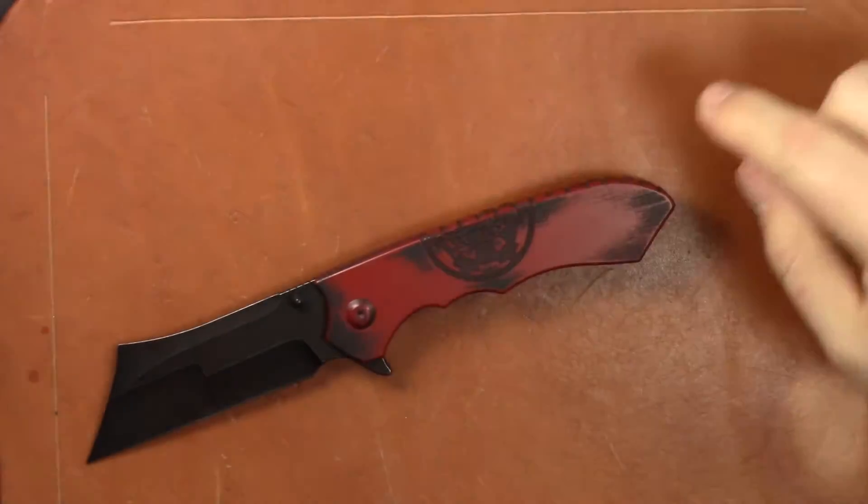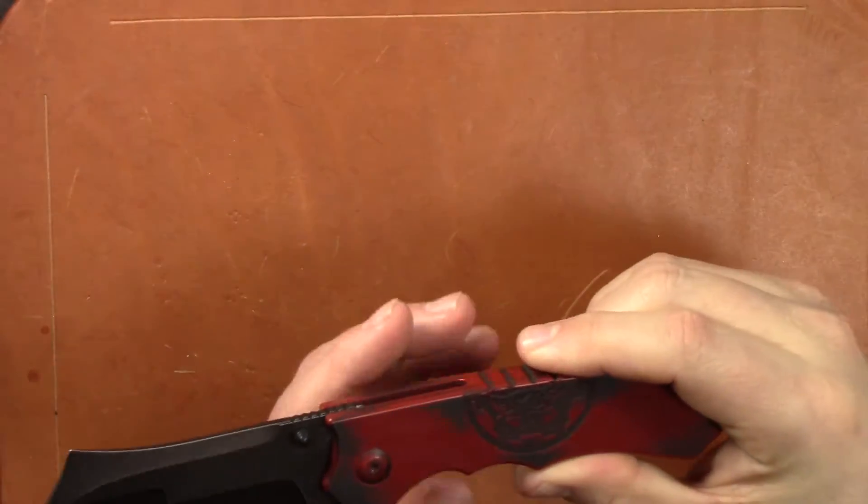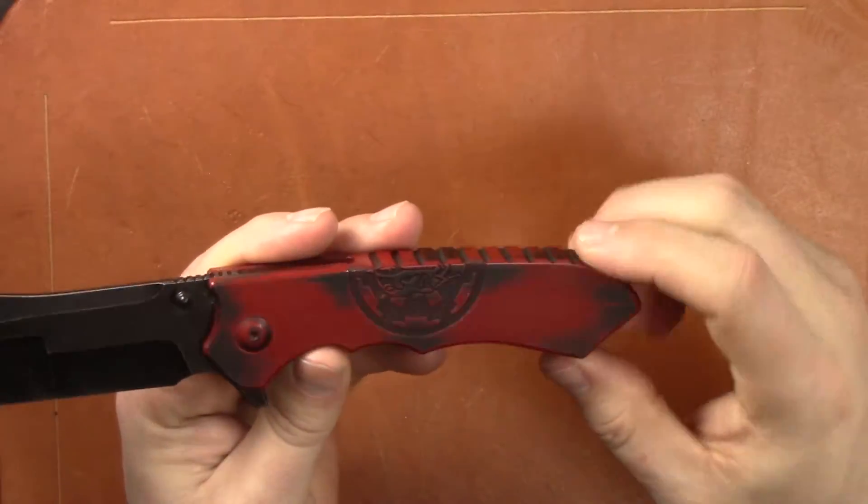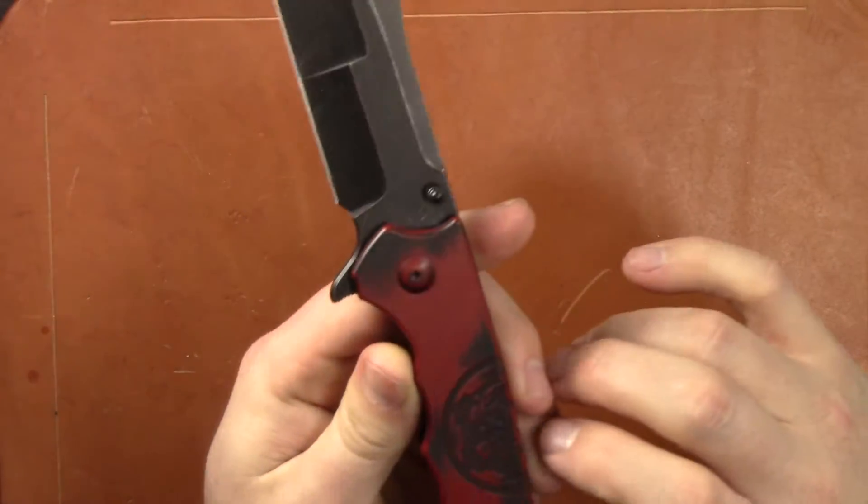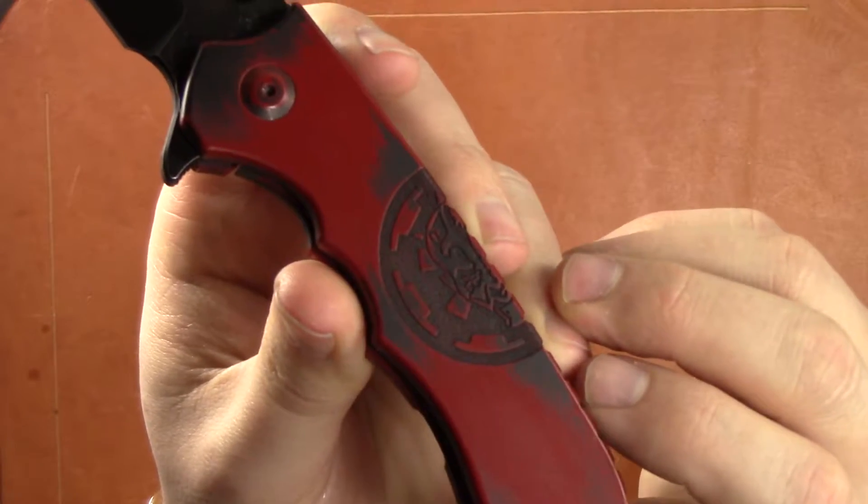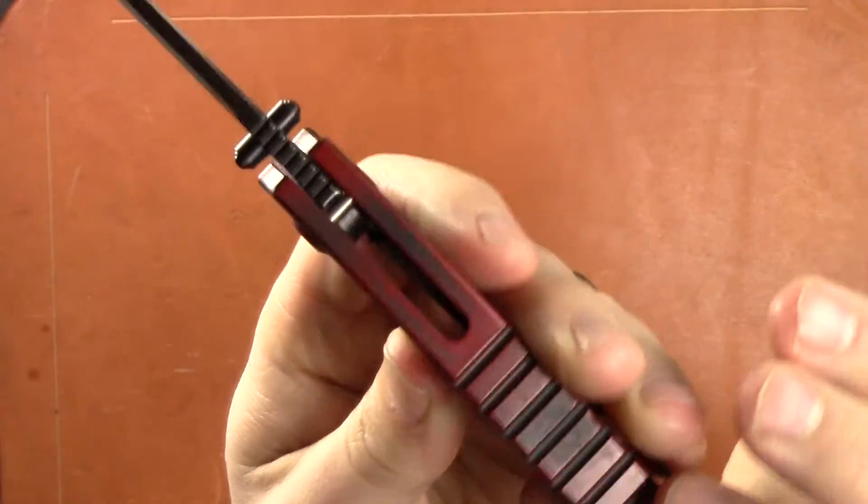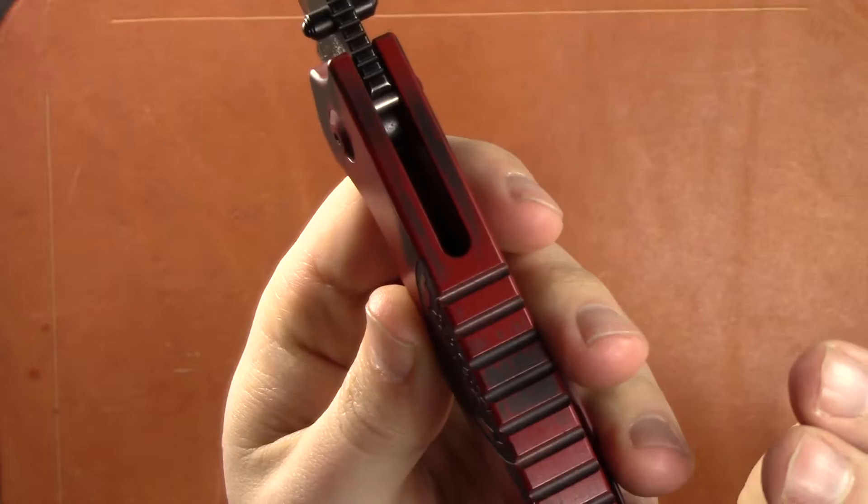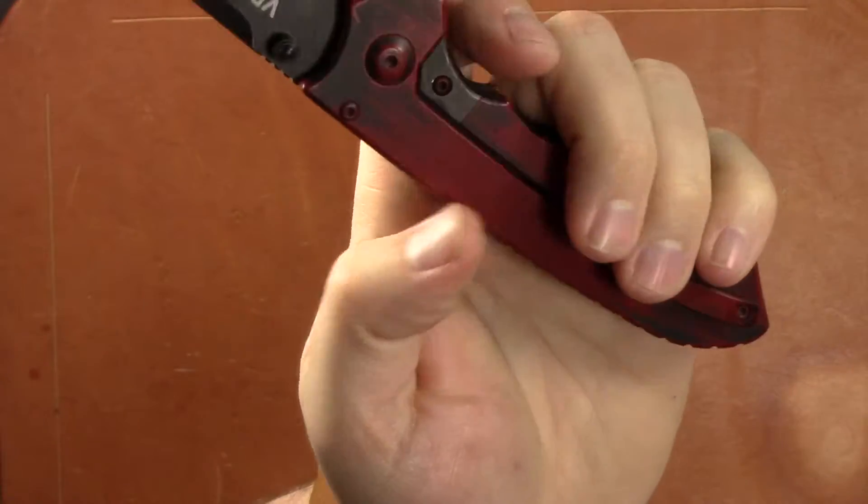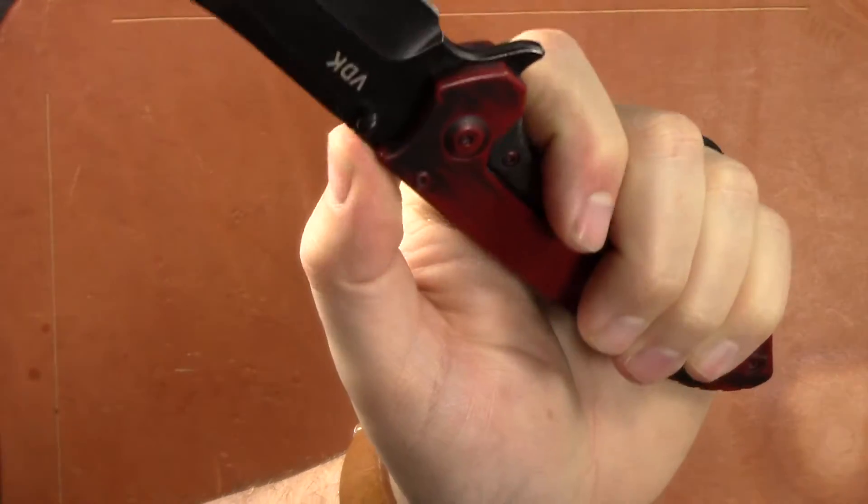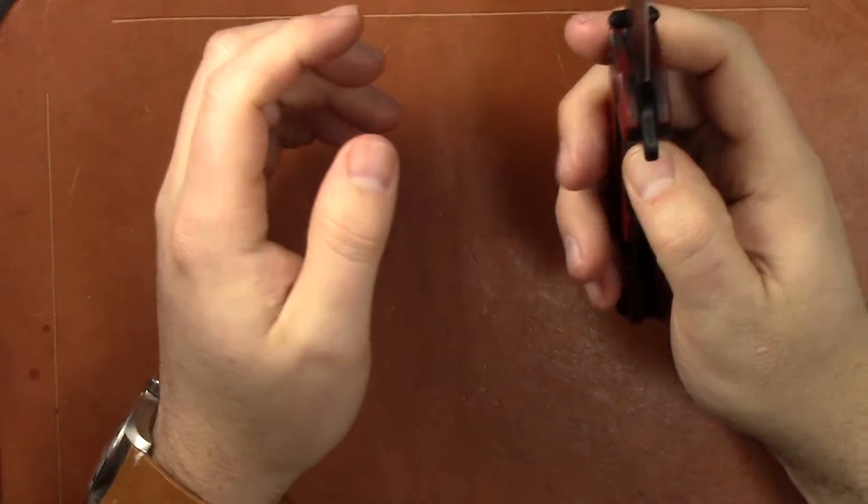So this one has a black and red cerakote finish. If you notice here on the handle, that is the face of Darth Maul which is pretty sweet. So if you're a big Star Wars guy, this is how they did this knife and he ended up grabbing this one from Fanatic Edge.